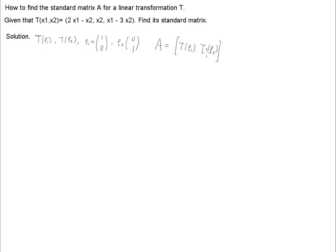Now, how can we find e1 and e2? Well, e1, we have x1 over here equals e1. For e1, we have (1, 0), right? So x1 over here, that means it's 1, and x2 is simply 0.